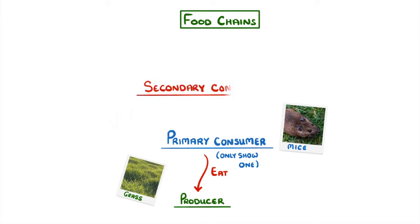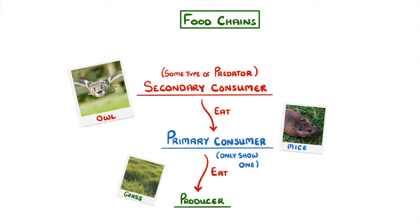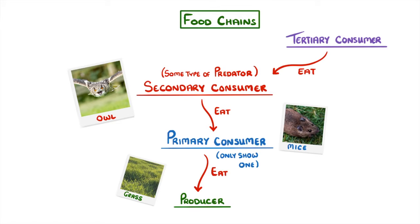Next up we have the secondary consumer, which feeds on the primary consumer, and there must be some type of predator — so here it would probably be something like an owl. Primary means first, so they're the first consumers; secondary are the second; and another word for third is tertiary. So next we have the tertiary consumer. Some ecosystems would then have even more levels after this, while others might not even have this many.